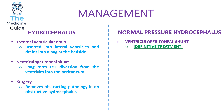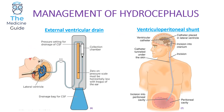To clarify the two treatment forms used for hydrocephalus: the external ventricular drain involves draining CSF from the lateral ventricles at the patient's bedside. The ventricular peritoneal shunt is a surgical procedure that drains excess CSF from the lateral ventricles and diverts it into the peritoneal cavity for more long-term management.